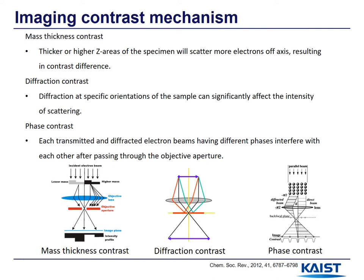Mass thickness contrast can be observed in all kinds of samples such as organic, inorganic, biological, amorphous, and crystalline. The incident electron beam will be scattered more by thicker or higher-density parts of the sample, resulting in a contrast difference. Diffraction contrast can be observed mainly in crystalline samples. In crystalline samples, atoms are arranged in a specific order and the spacing between them works as a slit for electron waves. Therefore, the intensity of scattering can be significantly affected by diffraction at specific orientations of the sample.